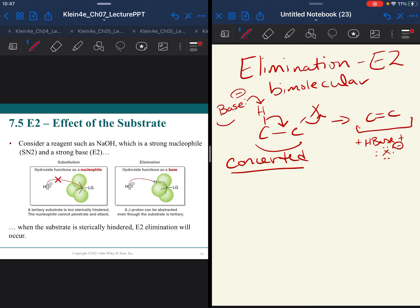Now, the substrate, let's think about what's making a good substrate. In this case, you can't have a methyl alkyl halide. You have to at least have two carbons. But you are going to see where SN2 could not happen on a tertiary alkyl halide, E2 absolutely can.